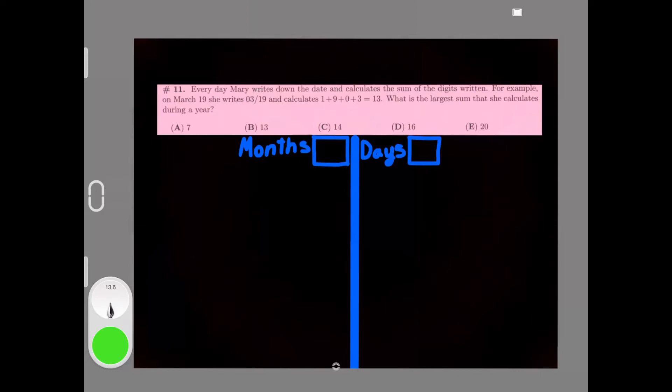Every day, Mary writes down the date and calculates the sum of the digits written. For example, on March 19th, she writes 03/19 and calculates 1+9+0+3=13. What is the largest sum that she calculates during a year? Let's first look at the months.